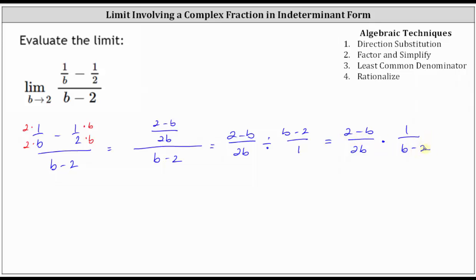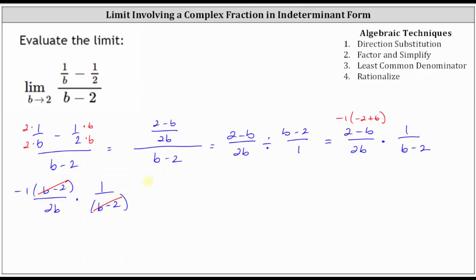Looking at (2 minus b) and (b minus 2), these two expressions are opposites — in (2 minus b) the 2 is positive and b is negative, while in (b minus 2) the b is positive and 2 is negative. We factor out negative one from (2 minus b), giving us negative one times the quantity (b minus 2). So we have negative one times (b minus 2) over 2b, times 1 over (b minus 2). The common factor of (b minus 2) cancels, simplifying to negative one over 2b. We can rewrite the original limit as the limit of negative 1 divided by 2b as b approaches 2.